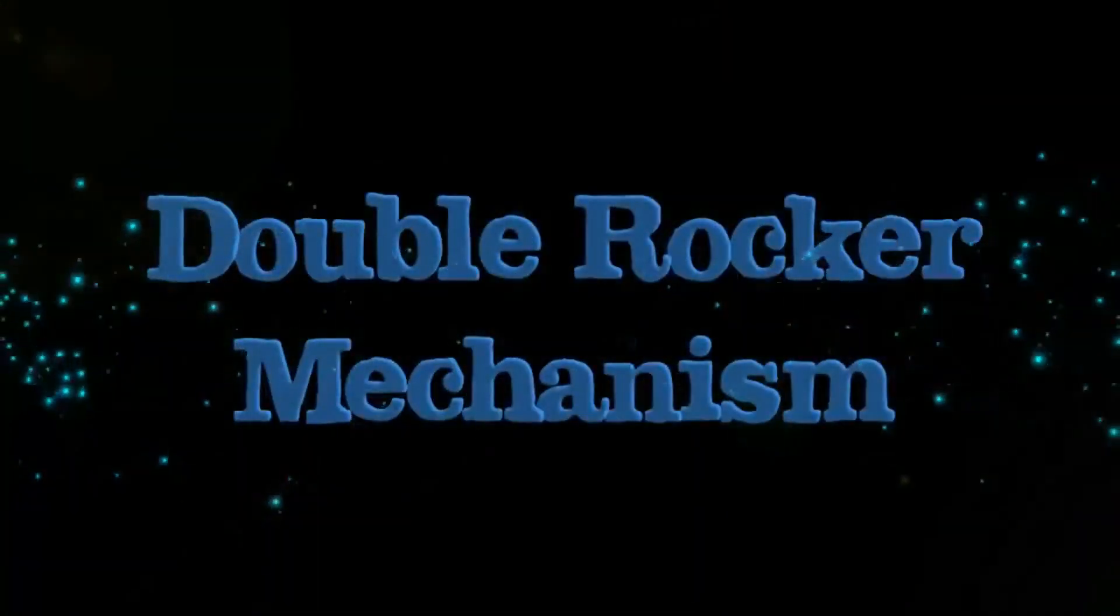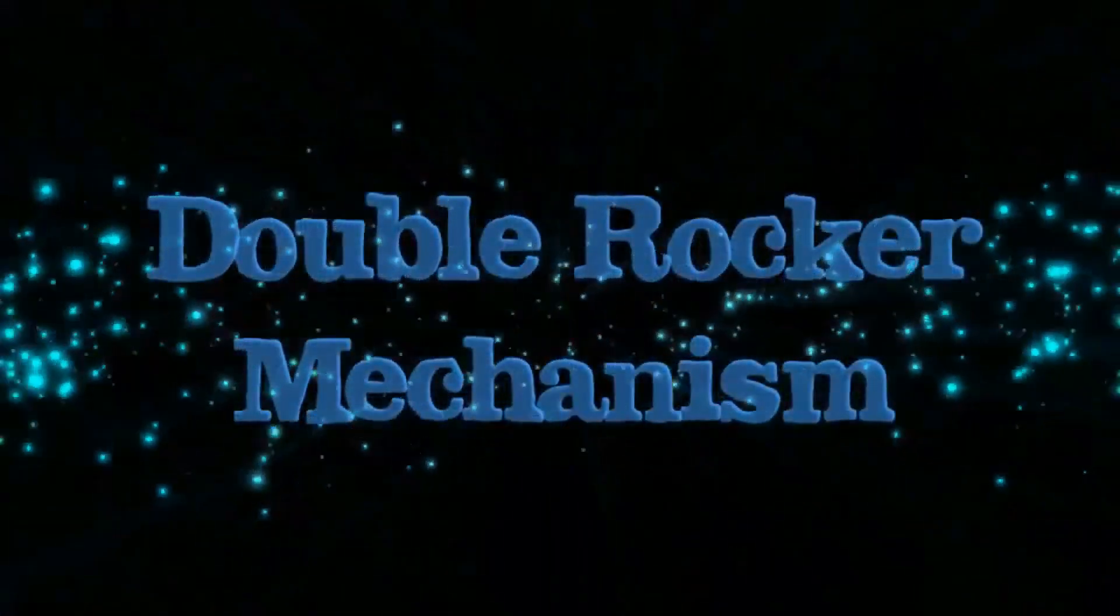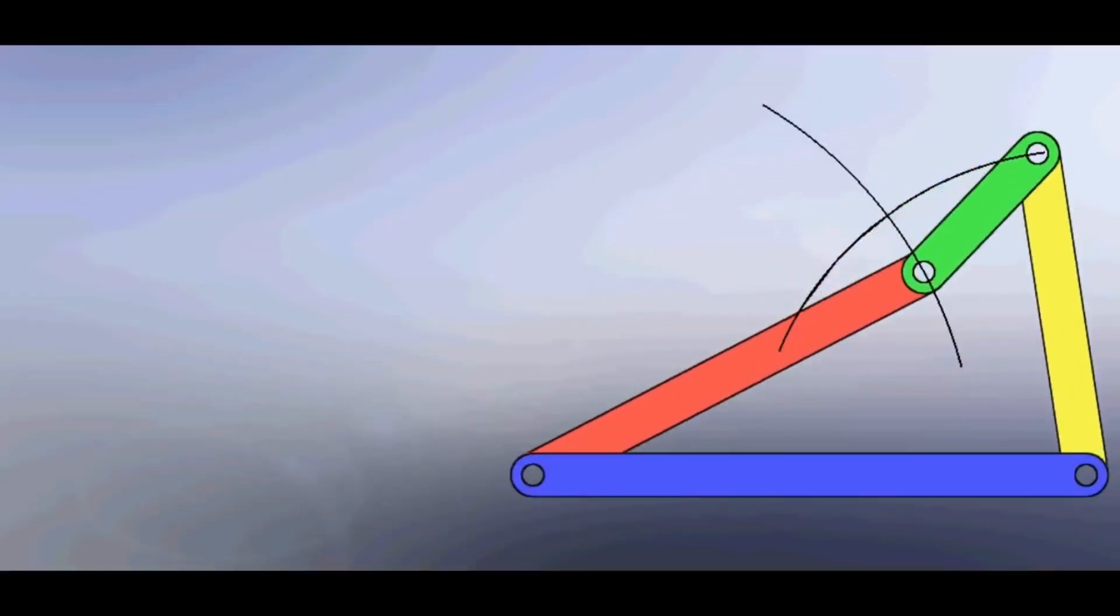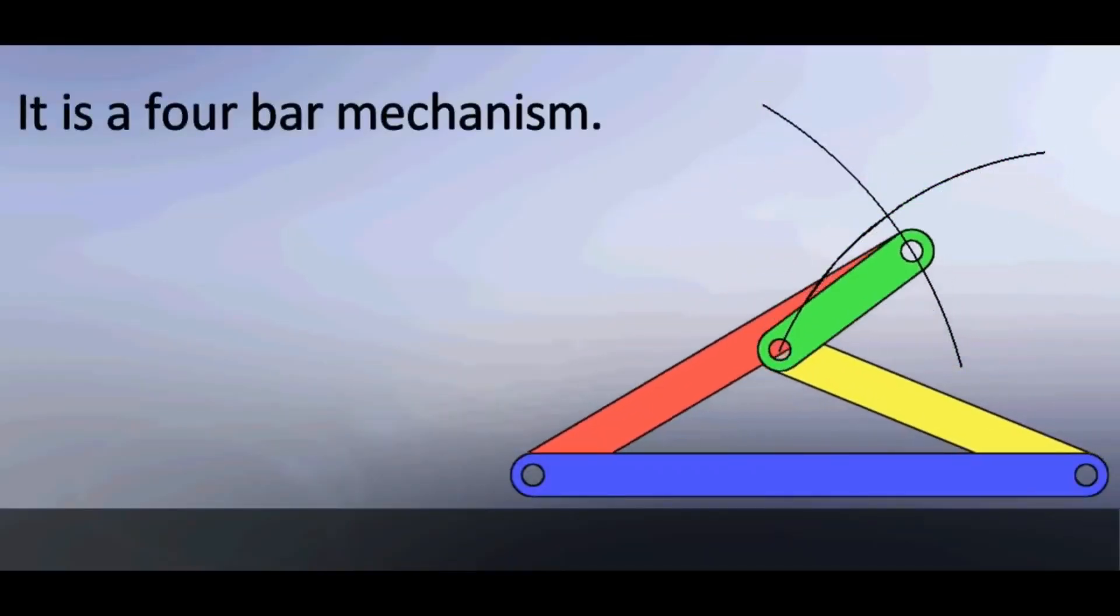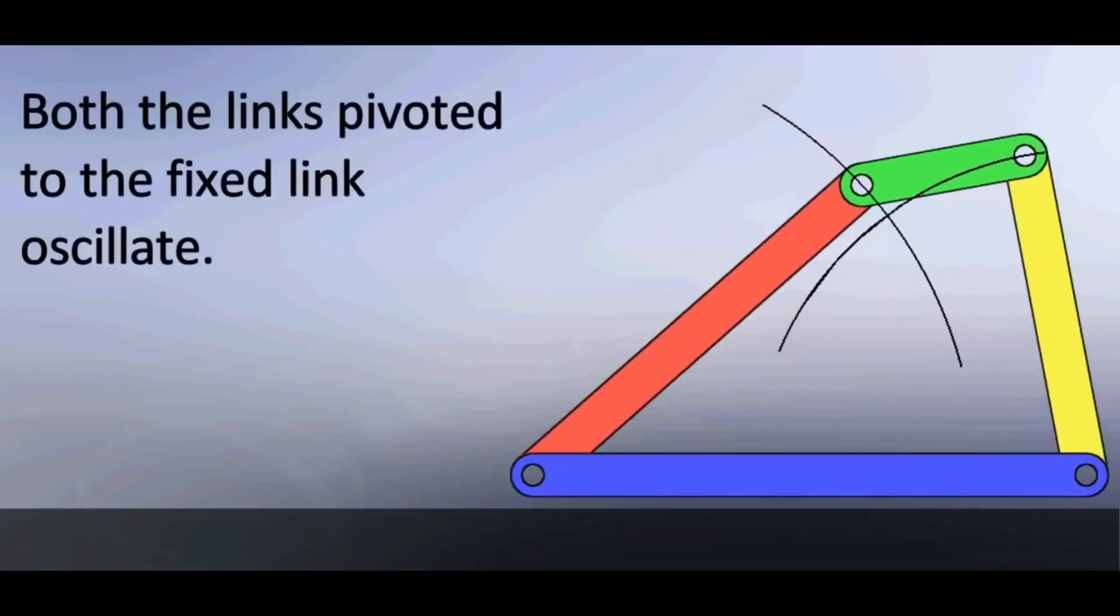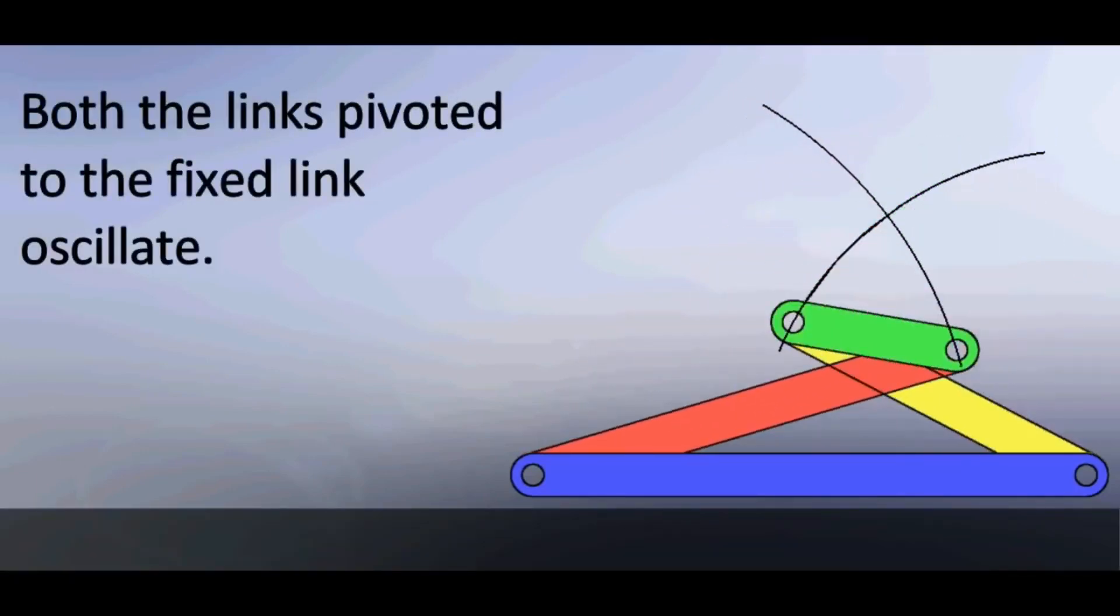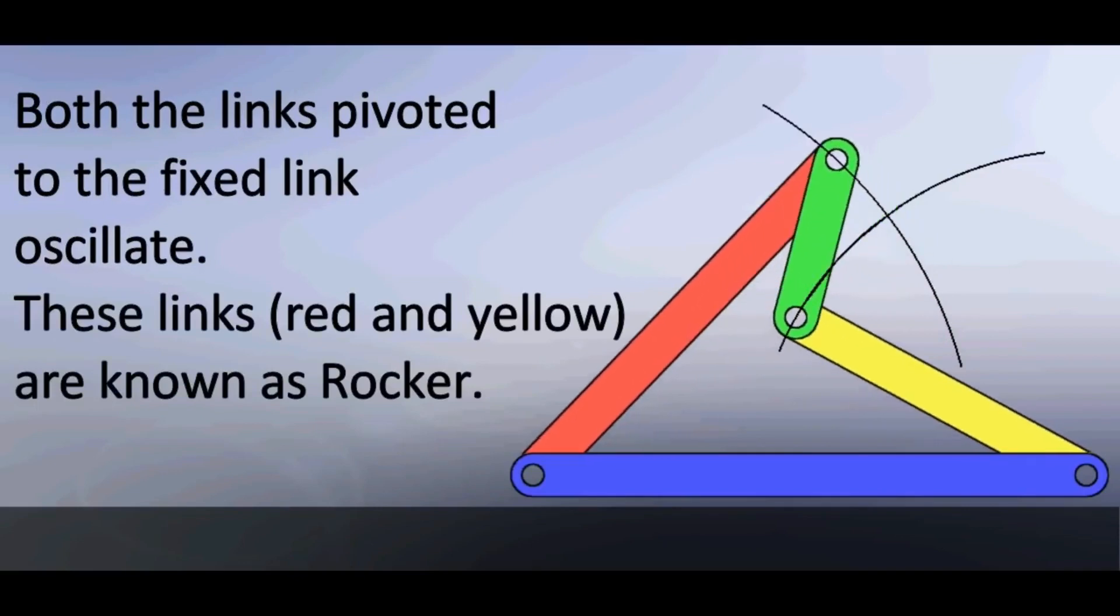Double rocker mechanism. It is a four bar mechanism. Both the links pivoted to the fixed link oscillate. These links are known as rocker.